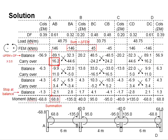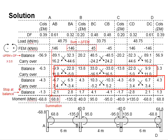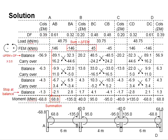The moment is distributed again based on the distribution factors to obtain the balance. The differences between fixed end moments are distributed according to distribution factors to obtain subsequent balances. This process is repeated until the balance becomes relatively small in comparison to the fixed end moment. The final moment acting in the column, beam, and each respective member is determined by summing the values in each column from the fixed end moment row downward.